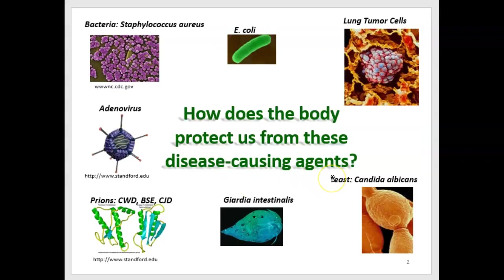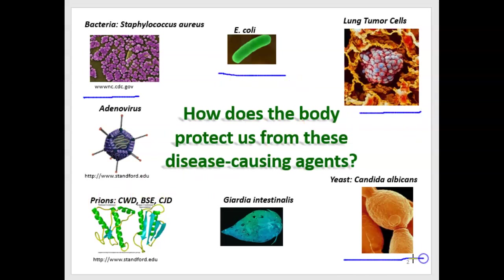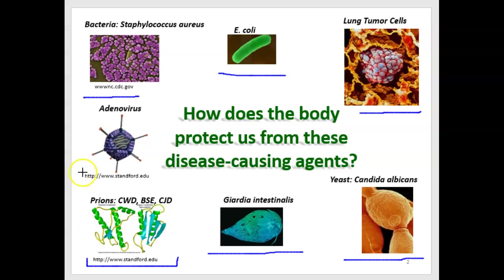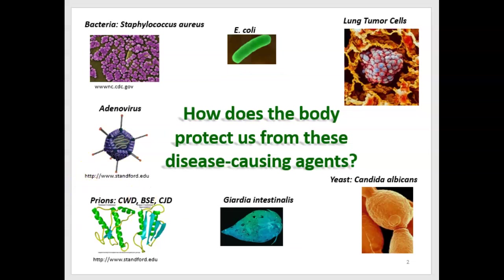We're going to look at how the body protects us from various disease-causing agents, like Staphylococcus aureus shown in the upper left, E. coli, tumors, and yeast infections shown on the bottom right. Also Giardia, a pretty bad gastrointestinal pathogen, prion diseases like CWD and mad cow disease, and the typical adenovirus.